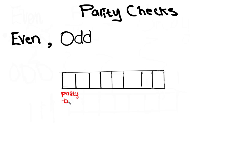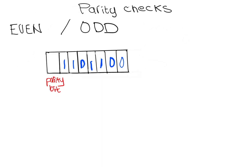The parity bit is set according to whether the parity being used is even or odd. In this example, if the byte is using even parity, then the parity bit needs to be set to 0, since there is already an even number of 1 bits in the byte, which is 4 1-bits. We thus get 0, 1, 1, 0, 1, 1, 0, 0.